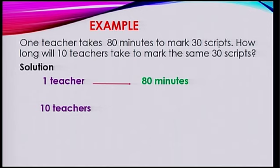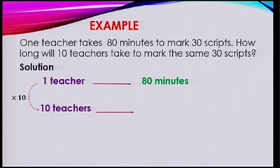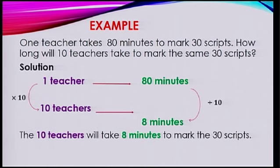We need to find the time taken by 10 teachers. For the first quantity, we need to multiply it by 10, because 1 times 10 is 10. So if you are multiplying a quantity by 10, for the second quantity you simply need to divide it by 10. So 80 divided by 10 is 8 minutes. Therefore, the 10 teachers will take 8 minutes to mark the 30 scripts.